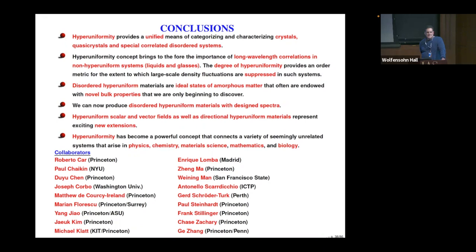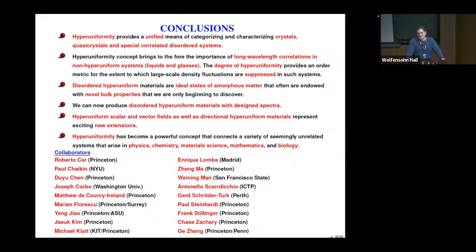Question from the audience: I think you mentioned the distribution of galaxies — was it hyperuniform or not? The Harrison-Zeldovich spectrum of the early universe is presumably linear in k, so yes, that was what I was referring to.